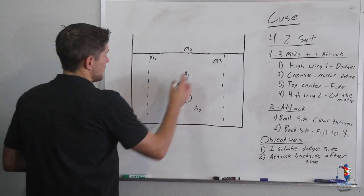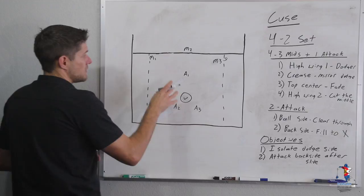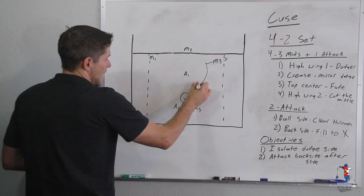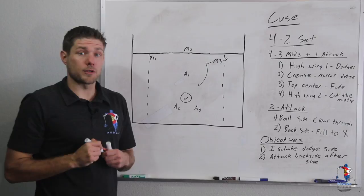The first rule we have is one of our high wings, one of these two players, is going to be the initial dodger. As he dodges, he does have the ability to go down the alley or over the top. But in this example, we're just going to have him come down the alley because that's where most of our live video comes from.